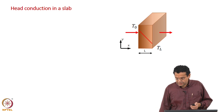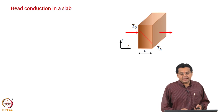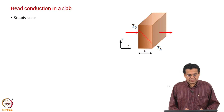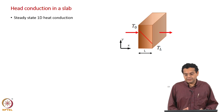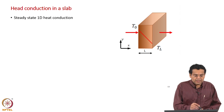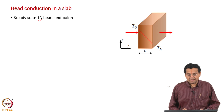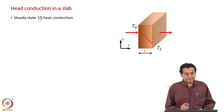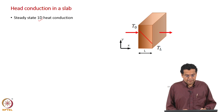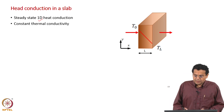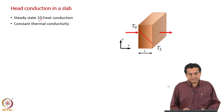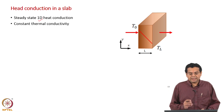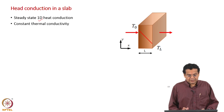We will consider steady state condition and only one-dimensional heat transfer — that is why this is called steady state one-dimensional heat conduction. We will also assume that the thermal conductivity is a constant, meaning it does not vary with temperature.